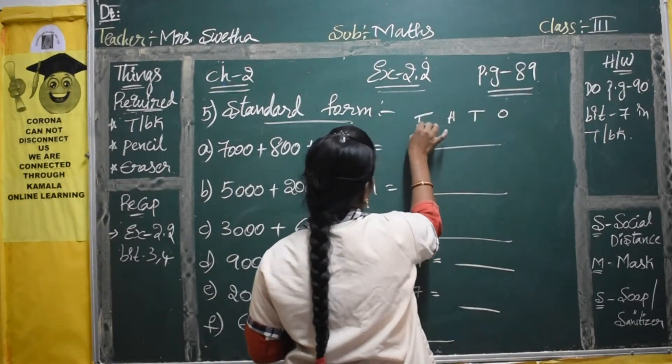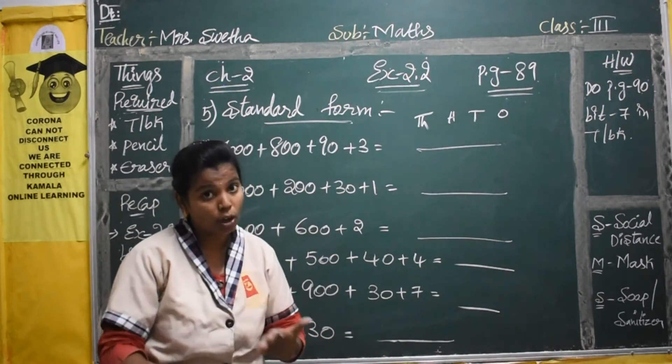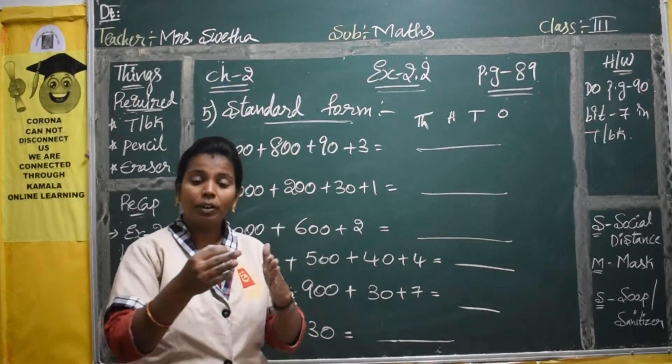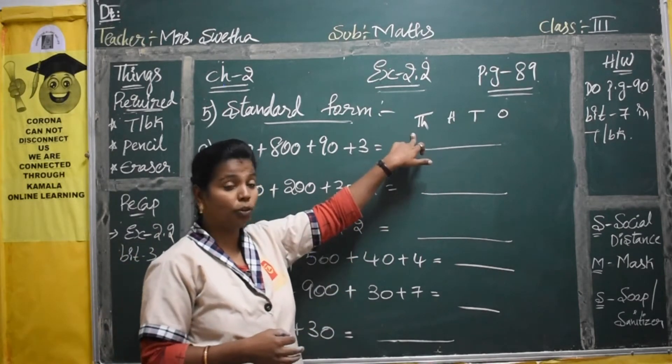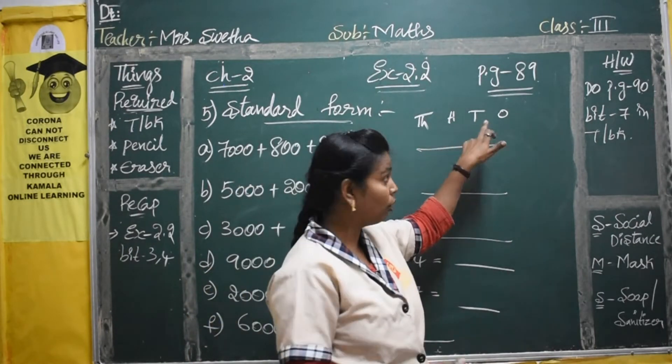Write place values on the top of the number so that you know for which place how many zeros you will get. For thousands you get three zeros, for hundreds you get two zeros, for tens you get one zero, and for ones you will get no zeros — just the direct number itself. According to the number of zeros, you take only the number to that place — no zeros, no plus signs.